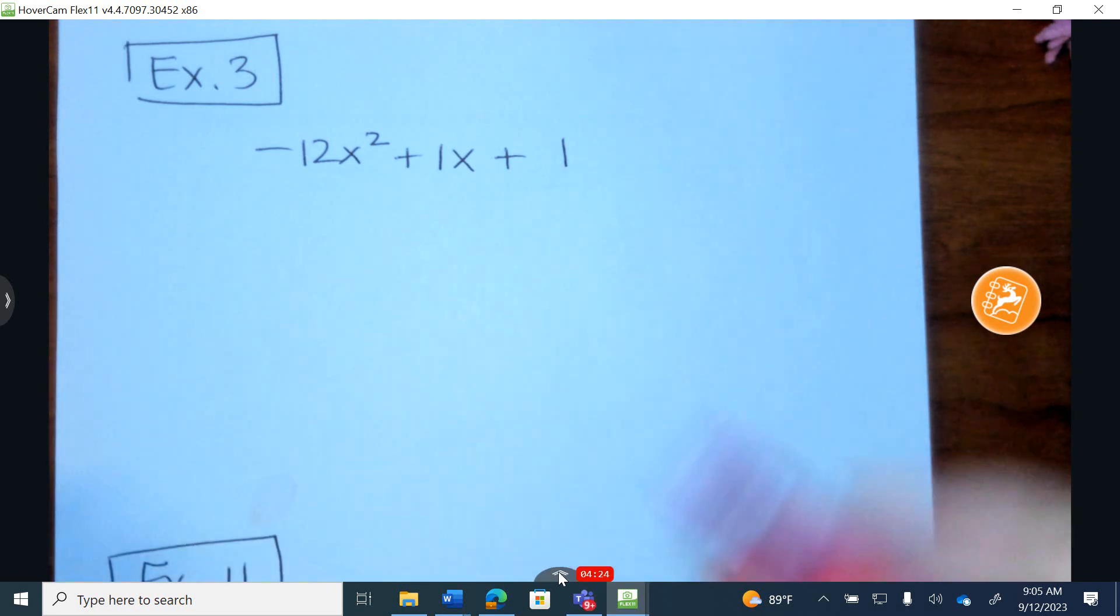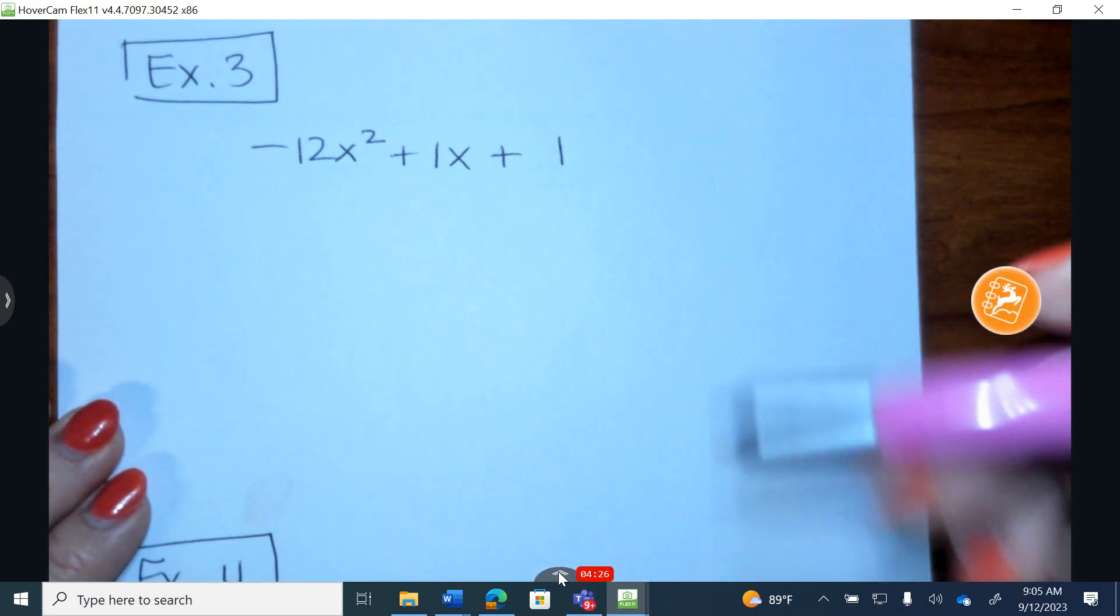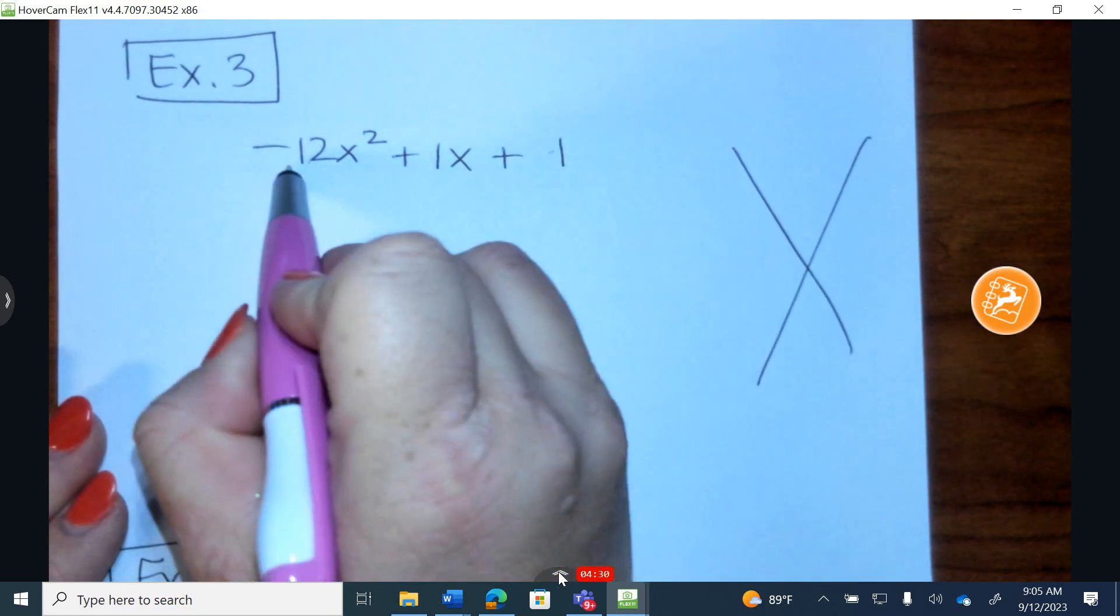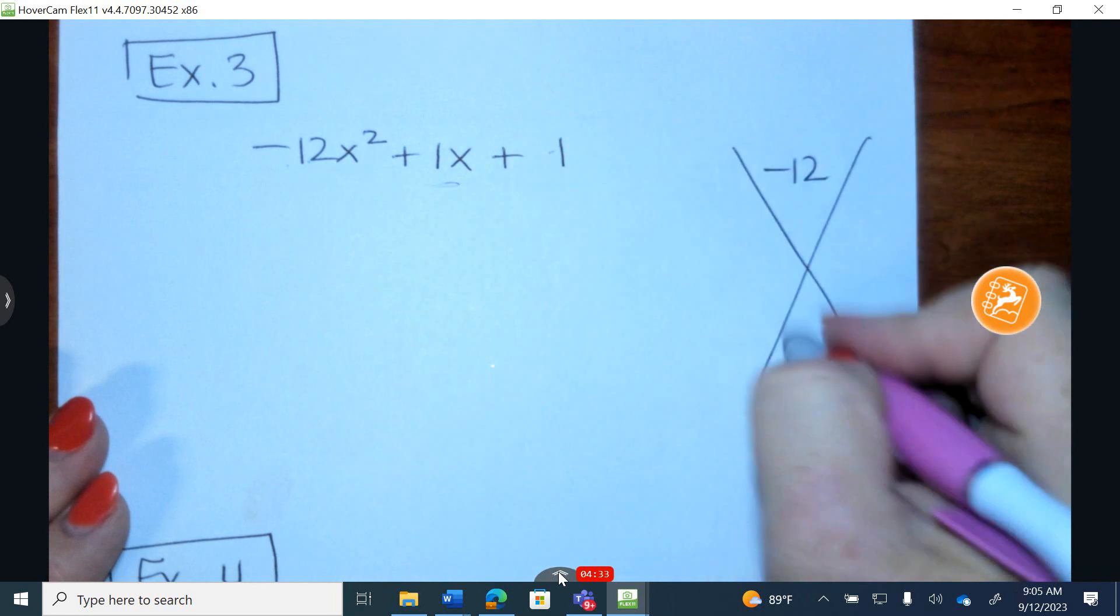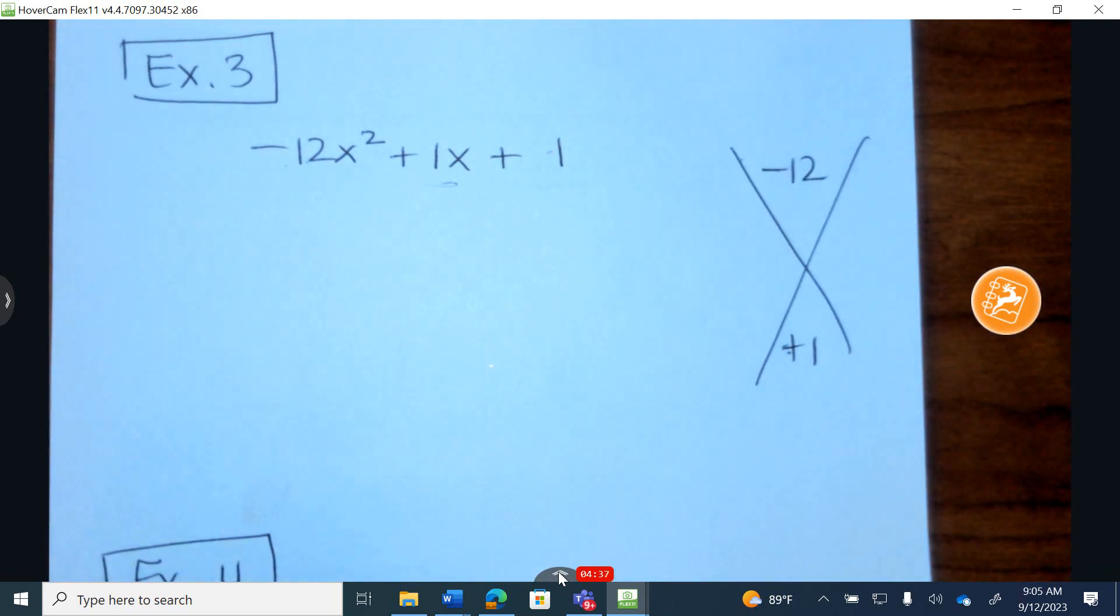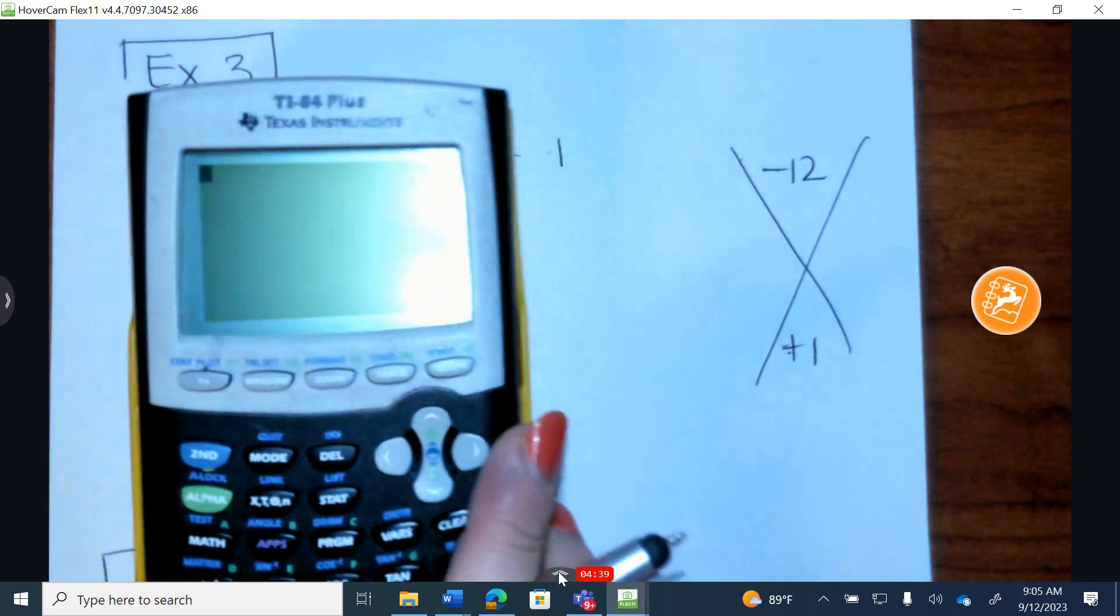In example number 3, I'm going to come off to the side and I'm going to make this large X. A times C, be careful of your symbols, A times C is negative 12. And my B term is a positive 1. Make sure to put the symbols here. Now again, what if you don't have great number sense? Well, let's do this together.